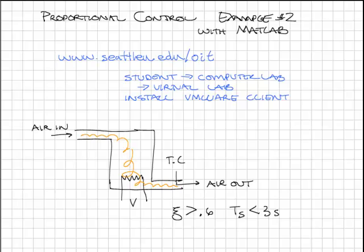No cheating. First assignment, draw the area on the complex plane where the system poles need to be. So we're looking for an area where damping ratio is greater than 0.6, settling time is less than 3 seconds.